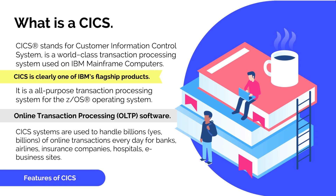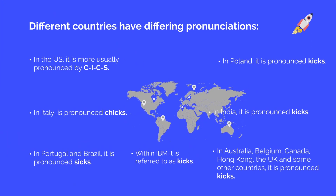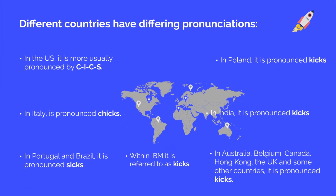Now let me share an interesting fact about the pronunciation of the term CICS. This term is pronounced differently in different parts of the world. In the US, it is more usually pronounced as C-I-C-S. In Italy, it's pronounced as 'Chicks.' In Portugal and Brazil, it's pronounced as 'Six.' Within IBM, it's referred to as 'CICS.' In Poland, India, Australia, Belgium, Canada, Hong Kong, the UK and some other countries, it's also pronounced as 'CICS.'